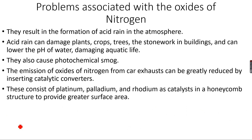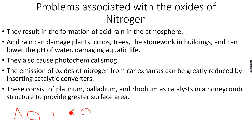Catalytic converters use three metals packed in a honeycomb structure. These three metals are platinum, palladium, and rhodium. They are packed in a honeycomb structure to provide greater surface area, because greater surface area means a greater rate of reaction. For example, nitrogen monoxide combines with carbon monoxide — both of which are produced in car exhaust.